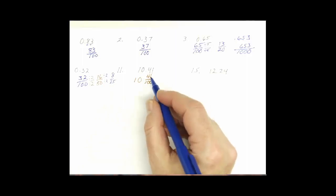Also need to check, can we reduce 41 hundredths? Well, 41 is prime. So that's a good indication that we're not going to be able to reduce that or simplify.